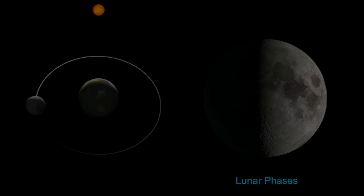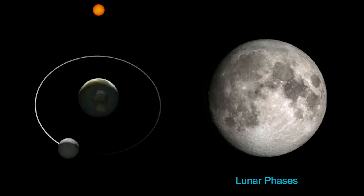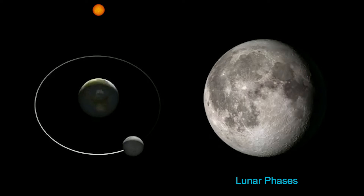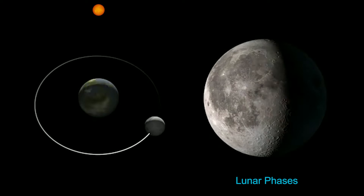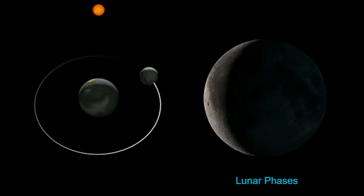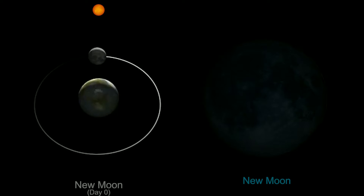The Moon orbits Earth every 29 and a half days. As it moves dutifully around our planet, we on Earth can observe the lunar phases. Starting with a new Moon, we see the Sun, Moon and Earth all in a line.